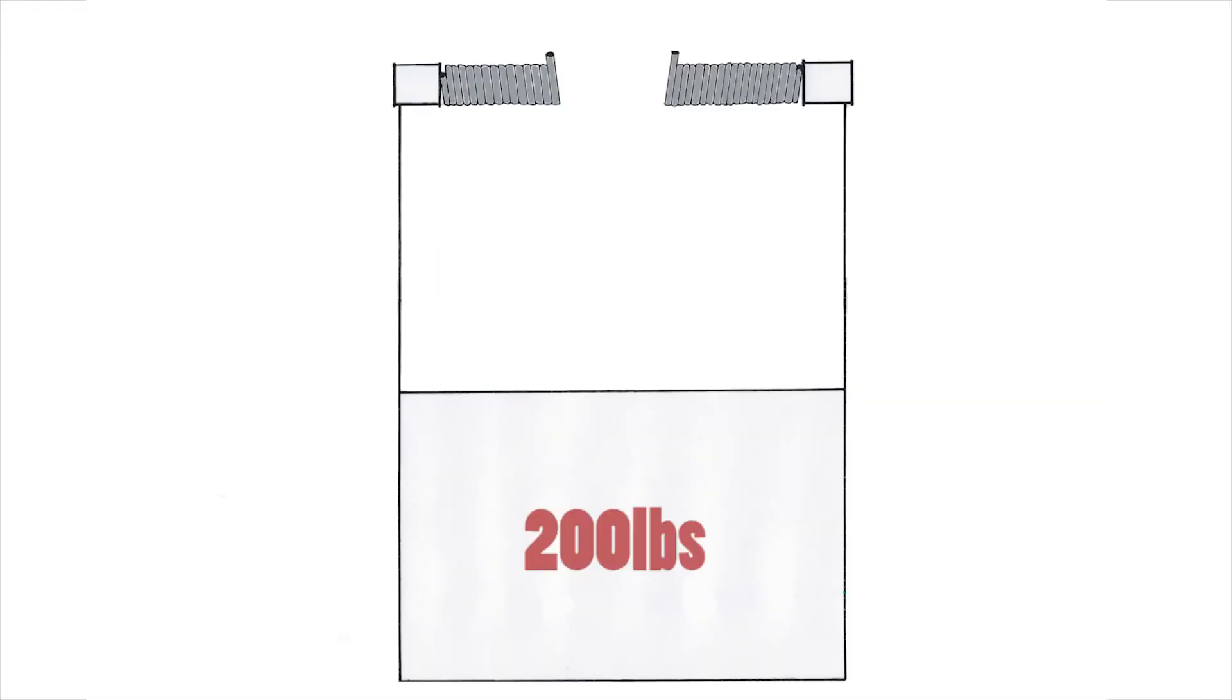The same is true of this garage door. It has only one balance point. The door is connected by cables on each side to the cable drums. These are in turn connected to torsion springs. The springs are wound to support the weight of the door at its lowest point.